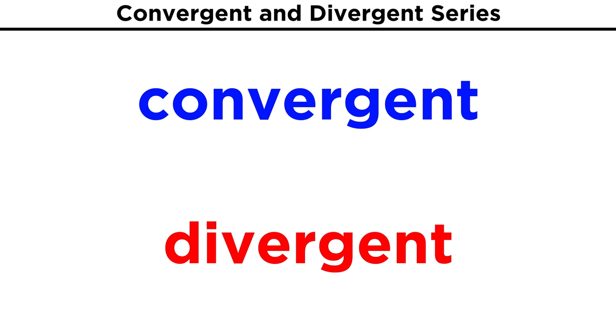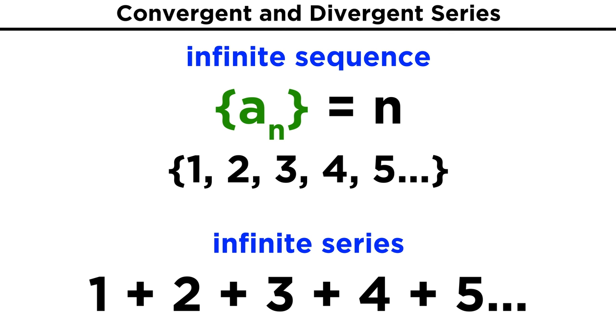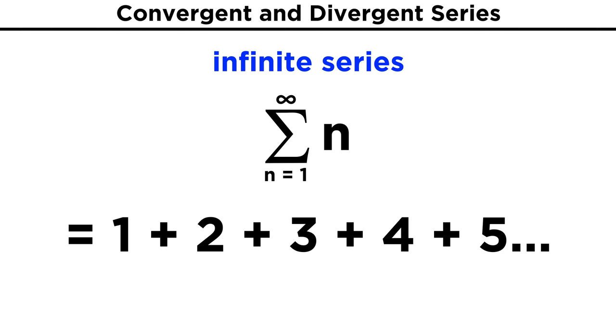Now that we understand convergence and divergence for sequences, let's apply this understanding to series. First, we have to recall what a series is. When we try to add up all the terms in an infinite sequence, we get an infinite series. This can be represented by listing out all the terms, but it can also be abbreviated using the summation notation we already learned, with the uppercase sigma. We can talk about convergent and divergent series, just like we did for sequences.